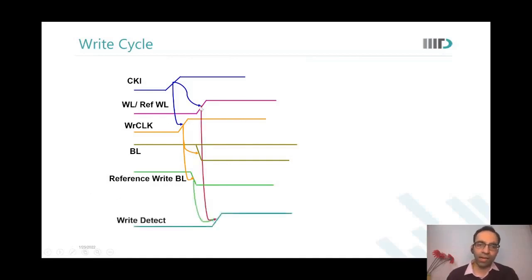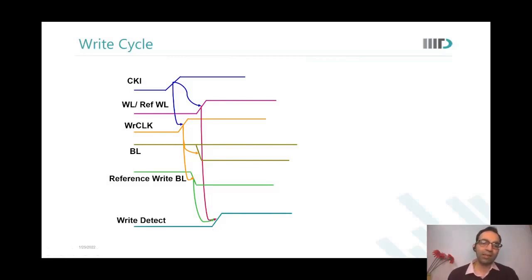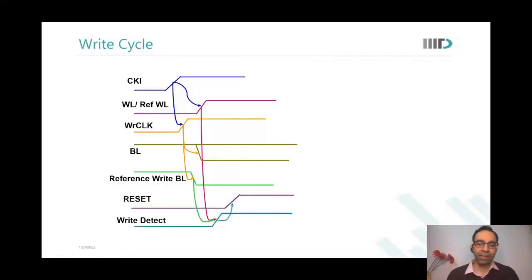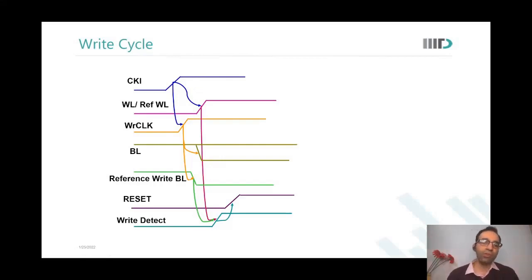After the word line and reference word line are selected and generated, we generate a signal called write detect, which senses that the contents in one reference cell have been written. After write detect is received, we generate a reset signal. This adds an additional step of reset compared to the previous slide.